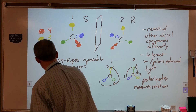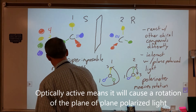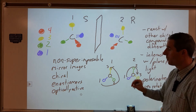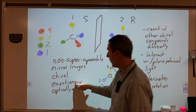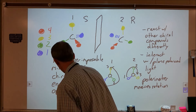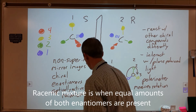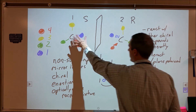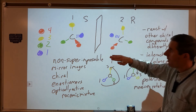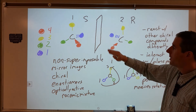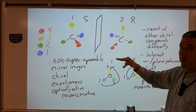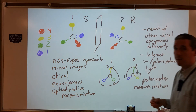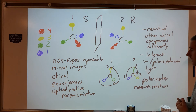One term is optically active — a chiral compound is optically active and causes rotation of plane polarized light. If we have both enantiomers present in equal amounts, that's called a racemic mixture. The S form will cause a rotation of light in one direction, and the R form will reverse that rotation. We'll end up with no net optical activity, because the two rotations from both enantiomers cancel each other out.